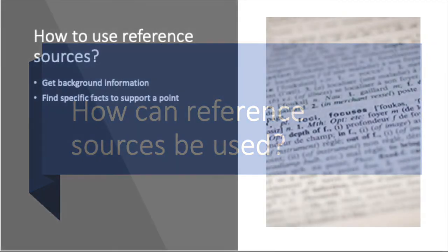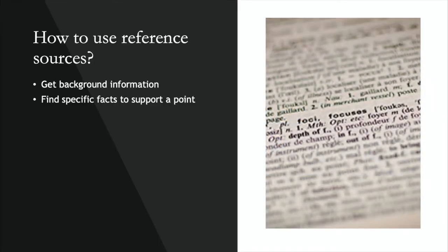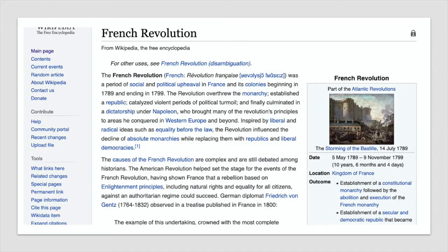There are typically two ways that you might want to use a reference source. One is to get background information on a topic. Wikipedia is a popular example of an online reference source used for background information. If you're writing a paper on music during the time of the French Revolution, for example, you might go to Wikipedia and read all about the French Revolution to get some context for what was going on in that country in the late 1700s.